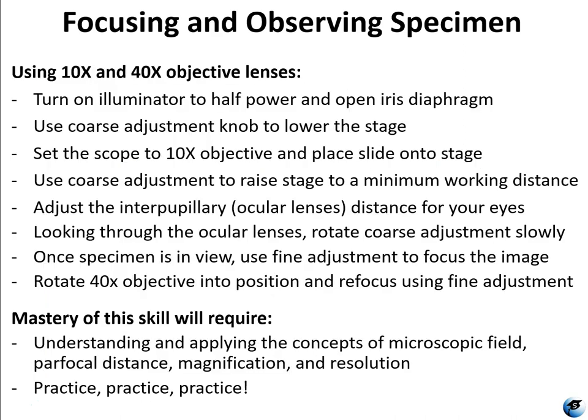When focusing and observing the specimen, when you first turn the light on, you want to turn it on to half power, because you start with the 10x objective and it lets all the light through — it's going to be very bright. Start with the illuminator on half power. Use the course adjustment knob to lower the stage and set the scope to the 10x objective. You always start on 10x — that's the scanning objective and also the shortest, so you have the smallest chance of scratching the slide or objective. Then put the slide on the stage and use the slide clips to hold it in place.